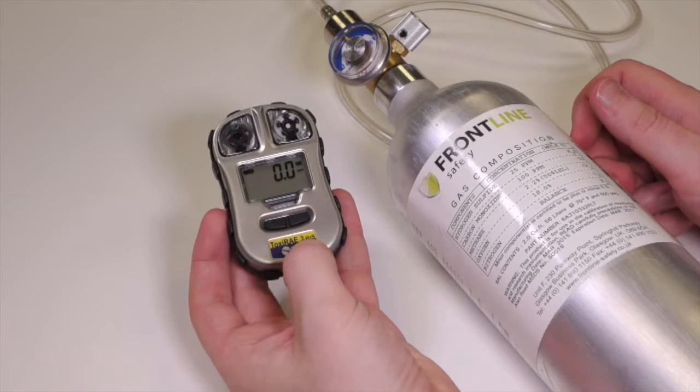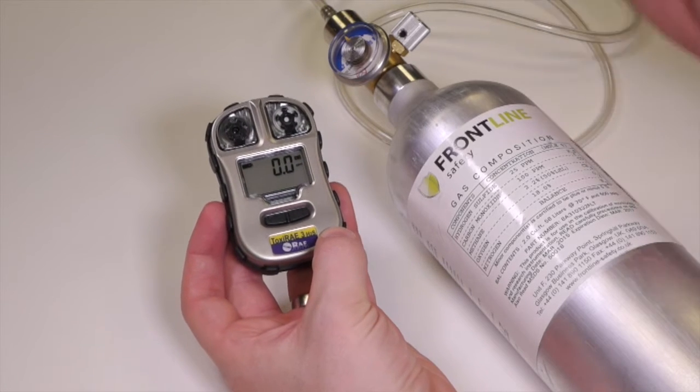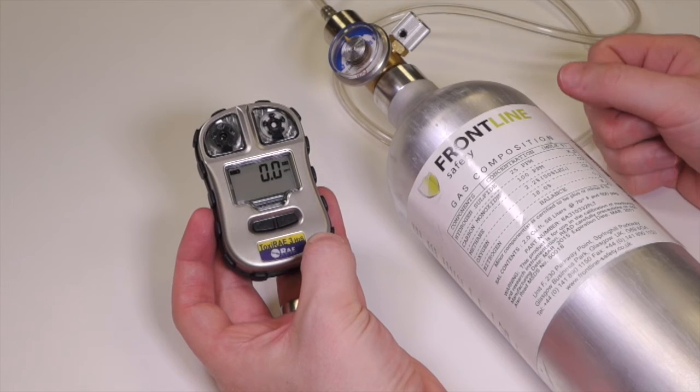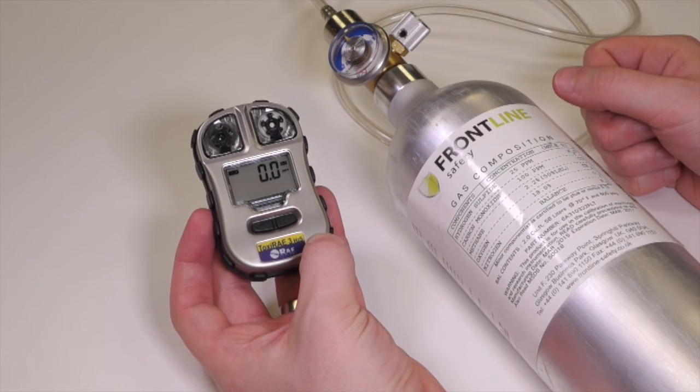If you don't actually have the 25 ppm H2S you can go into the instrument menu and change the span calibration gas to whatever the value is you have in your gas cylinder.